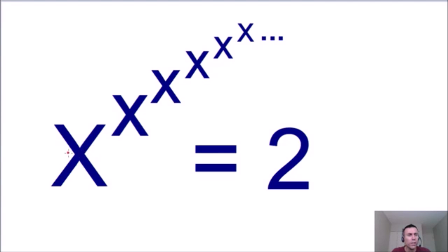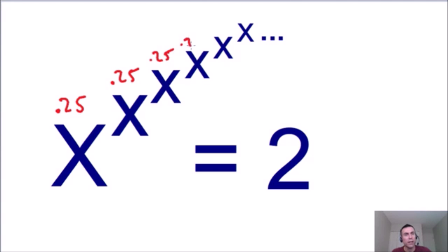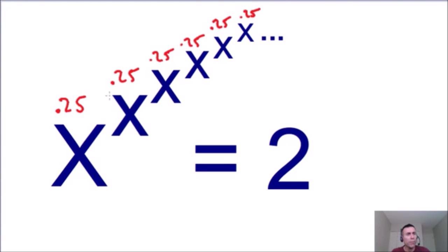Before I show you the solution, I want to explain the behavior of an infinite exponent tower by plugging in values of x. So let's plug in a value of 0.25 for x — we're going to plug in 0.25 for every single x in the tower. The only way to really evaluate this is by plugging it into a calculator as many times as possible. It's going to give you an indication of the value converging.